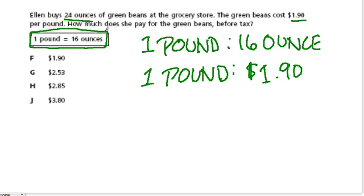How much does she pay for the green beans before tax? In other words, if she buys 24 ounces, how much does she spend? Let's combine these two ratios.